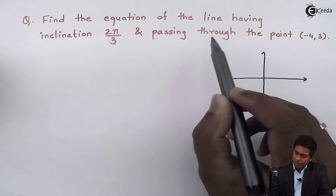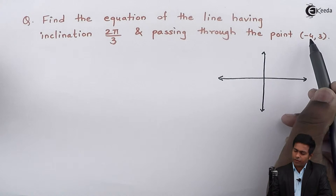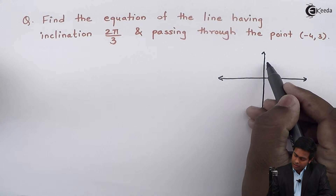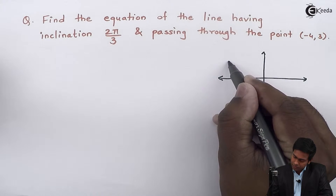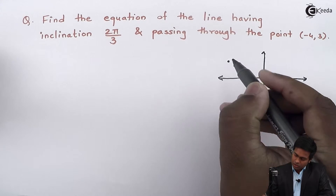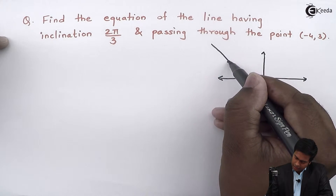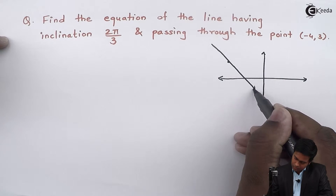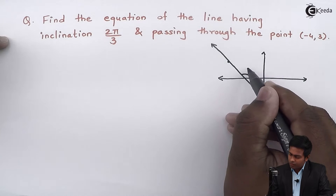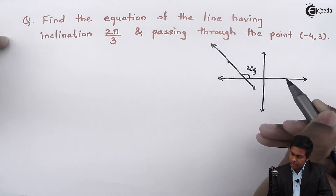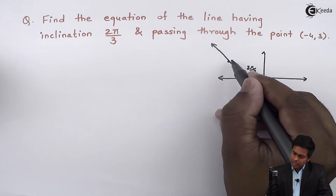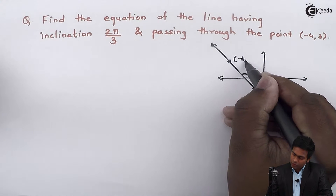Next, the line is passing through the point (-4, 3). If I try to plot this point, then (-4, 3) would be this point. So the line is passing through this point and it will look like this. Observing the diagram, this line is making an angle of 2π/3, that is 120 degrees, and it is passing through the point (-4, 3).